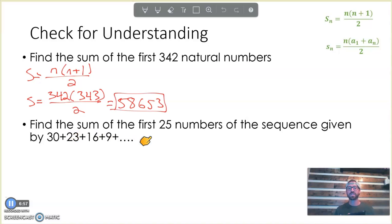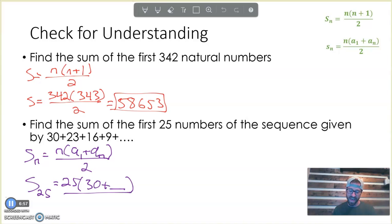Next, let's find the sum of the first 25 numbers of the sequence given. Our relationship to find the sum would be n times my first term plus my last term divided by 2. To find the sum of the first 25 terms, we have 25, my first term is 30. We don't know the last term yet, so we need to do some aside work to figure out the 25th number in this sequence.